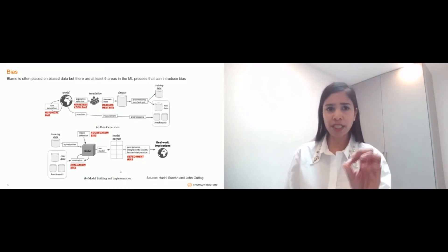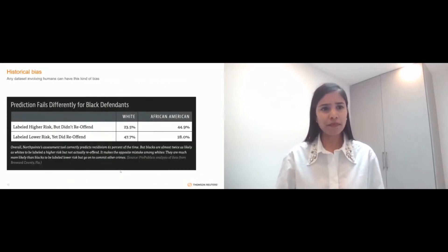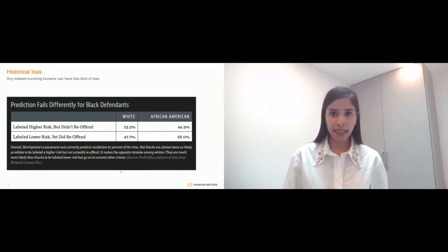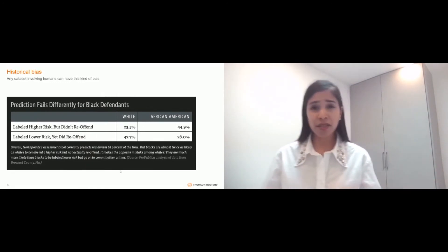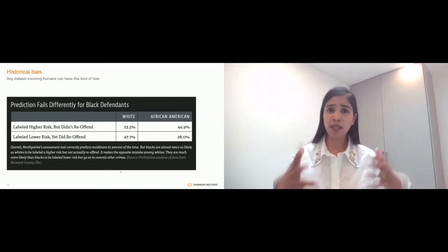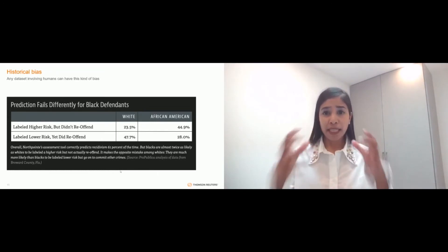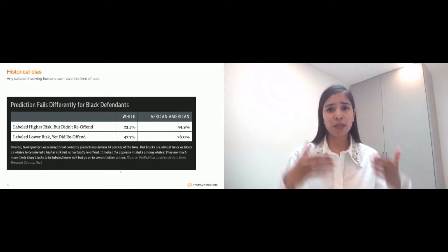I'm going to very briefly touch on two of those areas, historical bias and representation bias. Now, according to the researchers, historical bias is a fundamental structural issue affecting the first step of the data generation process. And it can exist regardless of how perfect your sampling or your feature selection. If the data is about human beings, then the data has bias. Bias in the data is pervasive because bias in us, in human beings, is pervasive.